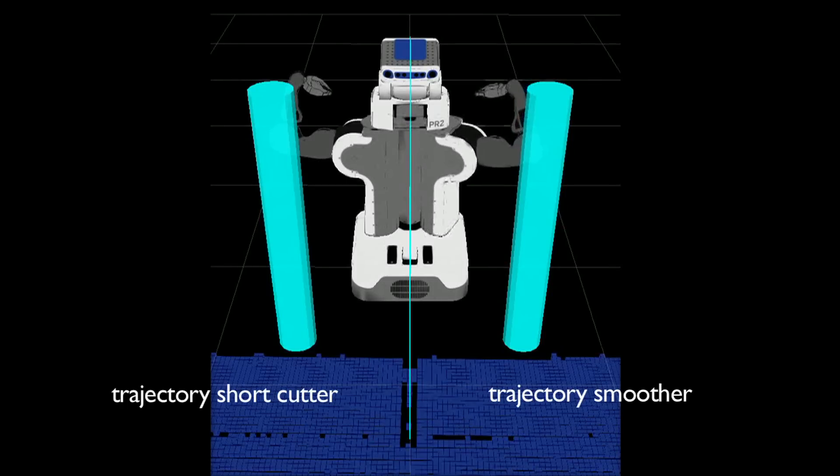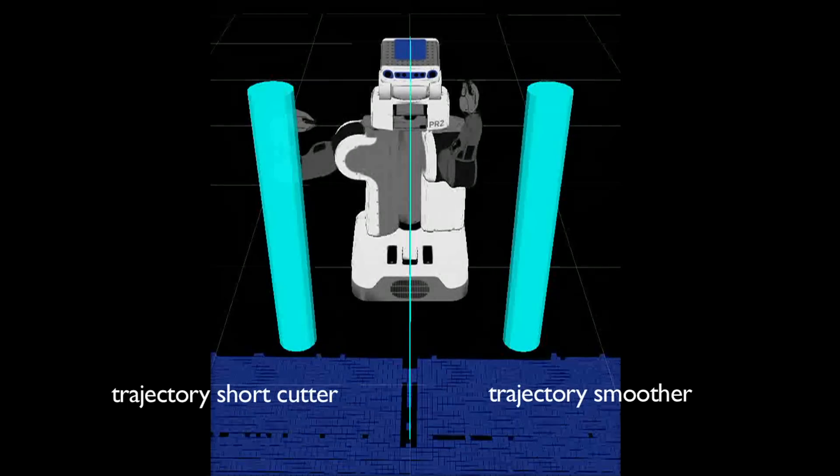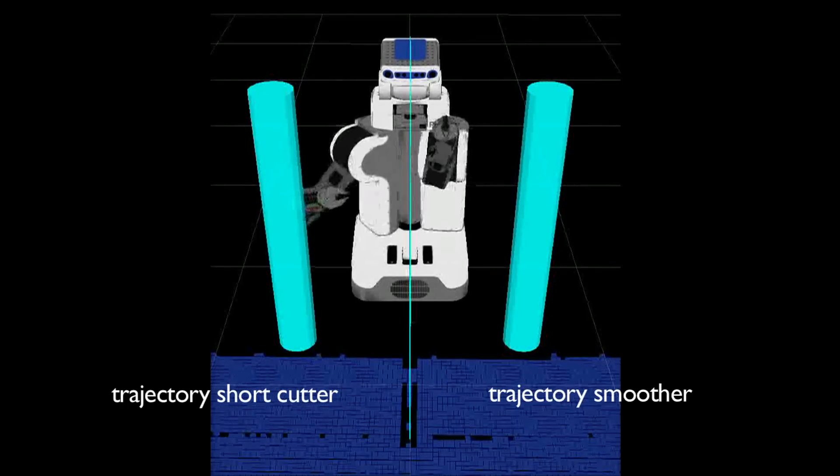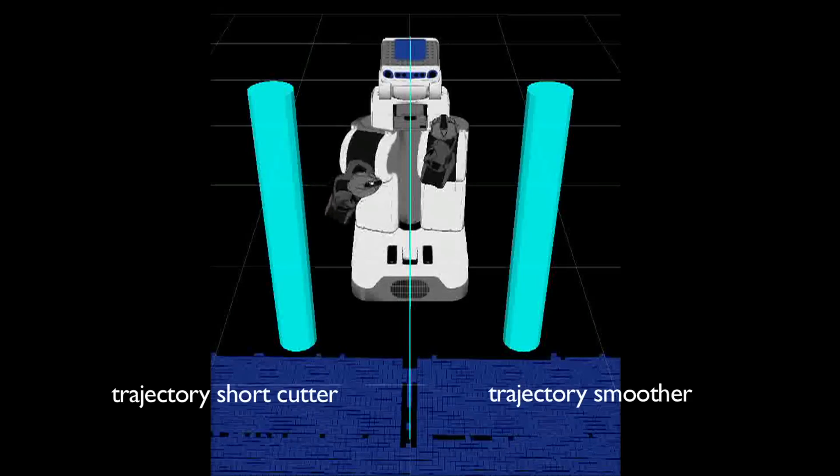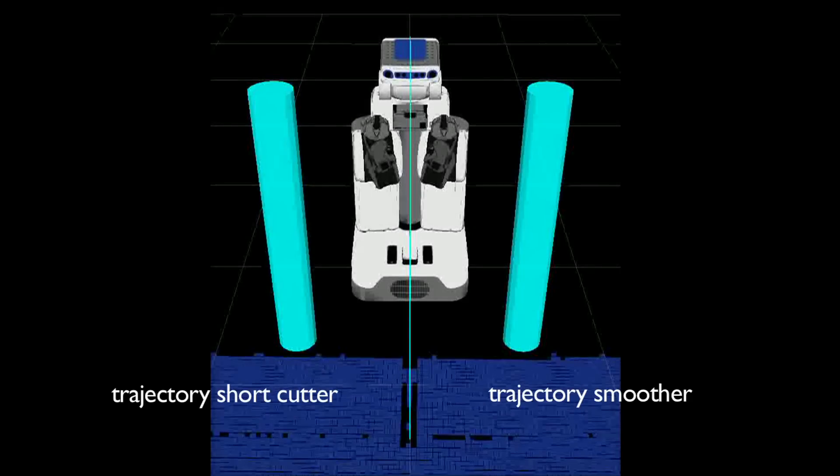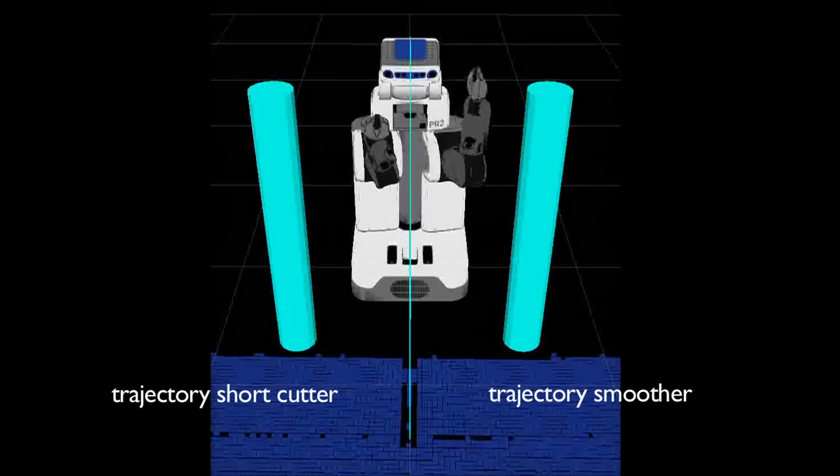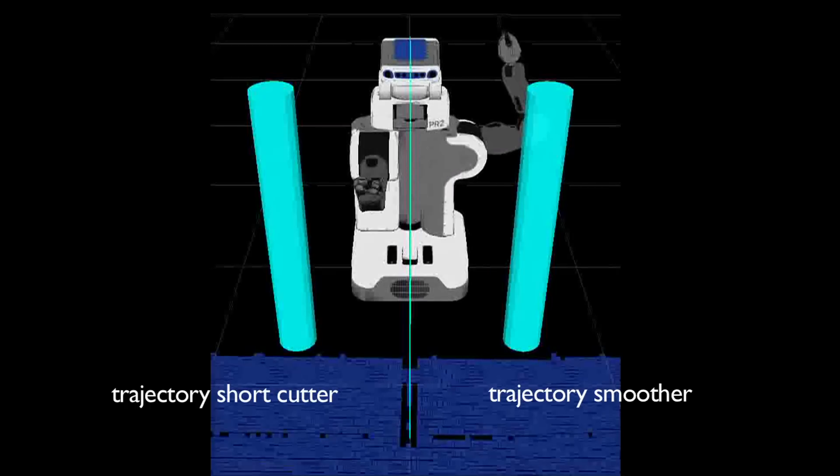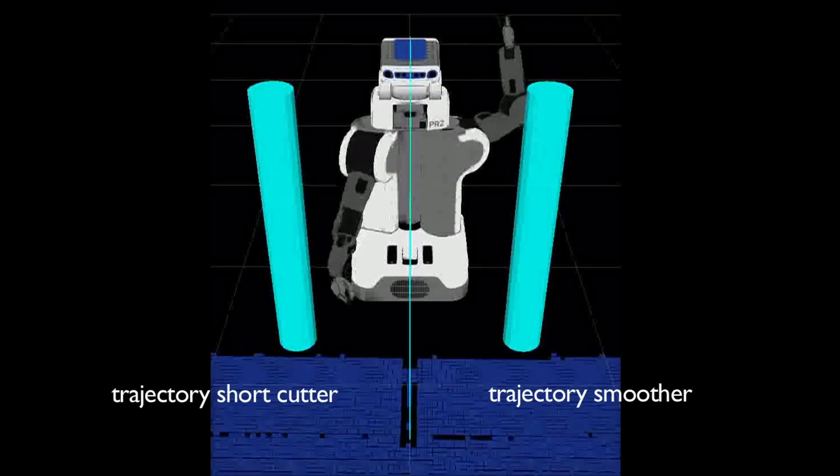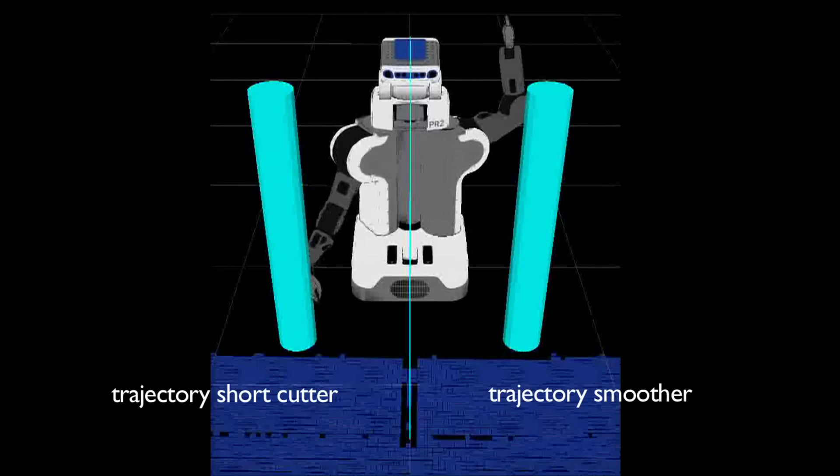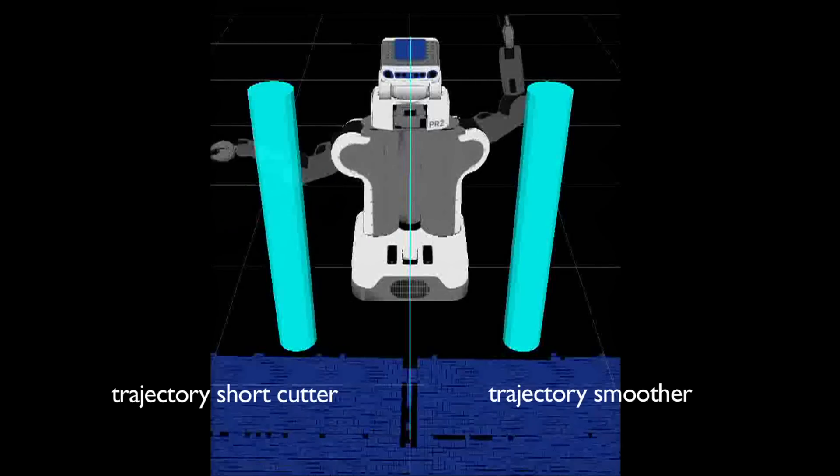The new trajectory smoother quickly transforms a series of planned trajectory points into an executable trajectory. Here, a series of motions are being planned, smoothed, and executed on each arm. The arm on the left uses the trajectory short cutter. The arm on the right uses the new trajectory smoother, which greatly improves the time to execution.